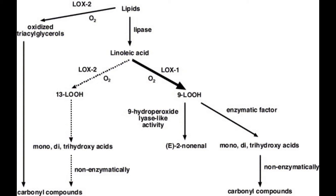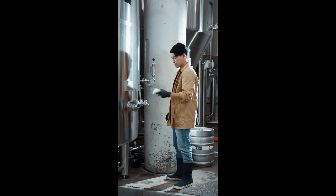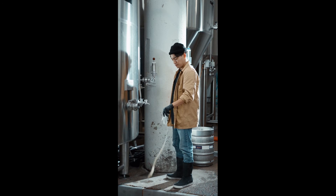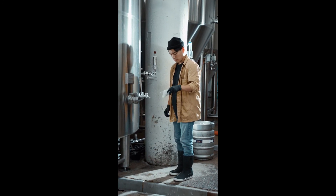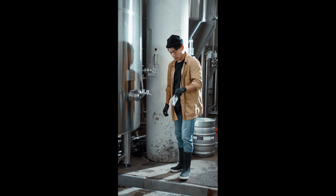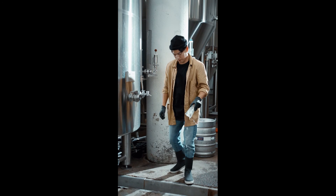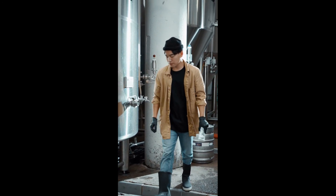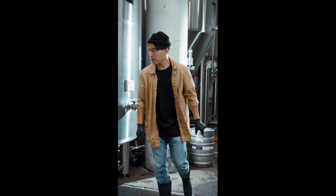The acids are initially and primarily released as triglycerols by the activity of barley and malt lipases. This occurs during the malting process, and so unless you are malting your own barley — and even then you may not be able to stop this from happening — you have no control over it. There are further activities that occur as a result of the mashing process, specifically the hydrolysis of triacylglycerols during mashing.